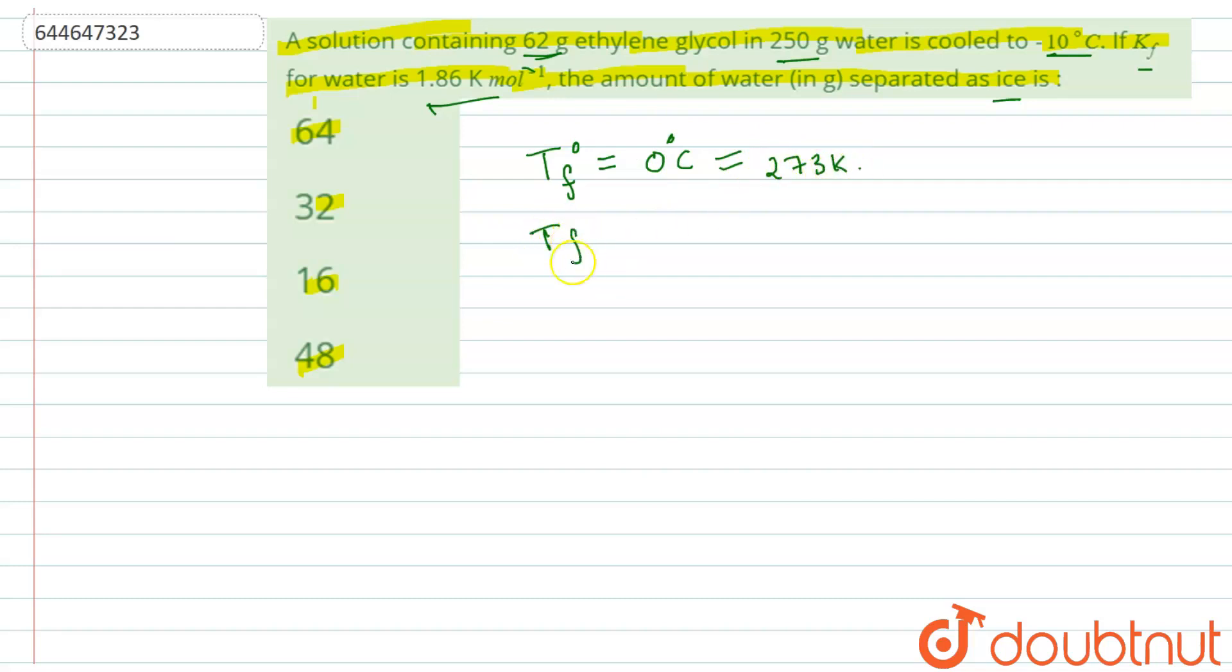And the freezing point for ethylene glycol will be, it is given that it is minus 10 degree Celsius in this case. So 273 plus minus 10 will give you 263 Kelvins. So the solution is cooled this.